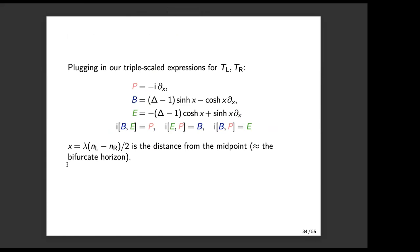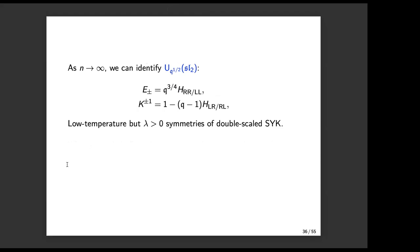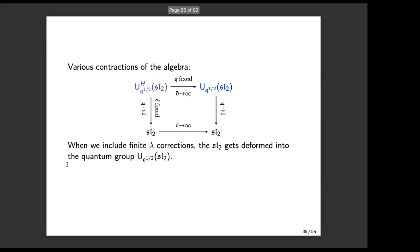Plugging in our triple-scaled expressions for the left and right Hamiltonians, we get very concrete expressions for how they act on a single particle. They act concretely in terms of the variable x — the distance from the midpoint of the bifurcate horizon. These elementary expressions act on wavefunctions of x, and you can check in about two minutes that they reproduce the expected output. When we include finite-lambda corrections, this symmetry group gets deformed into the quantum group U_q(SL2). You get the full quantum group in the limit n-bar goes to infinity; when n is kept finite, you do not get the full quantum group. This describes the low-temperature but finite-lambda symmetries of double-scaled SYK.